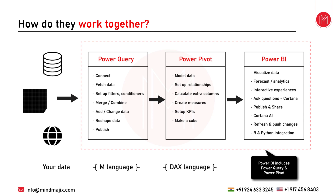After Power Query, the data moves to Power Pivot. As discussed earlier, Power Pivot is mainly used for analysis and modeling of data. With Power Pivot you can set up various relationships among the data, calculate extra columns, create measures, and set up various KPIs. The language used in Power Query is the M language (Mashup language), and for Power Pivot we use the DAX language.